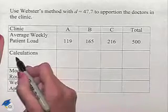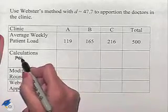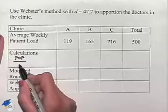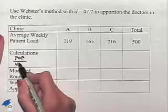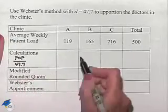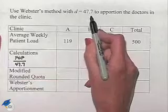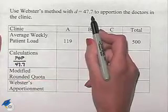With Webster's method, we're going to take for our calculations the population and divide by the value of D, which in this case is 47.7. Were that value not given to us, we would have to use trial and error to come up with a value.